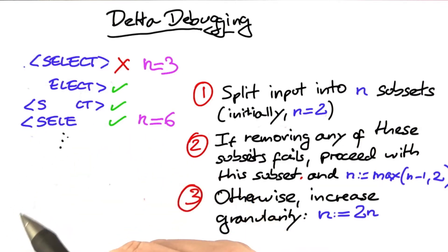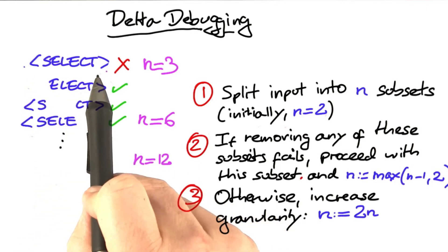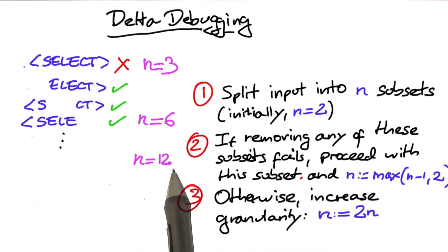And then we have to increase the granularity again, which would be 12. But now our input only has 8 characters, and we can't split an 8-character input into 12 subsets unless these subsets would be empty.